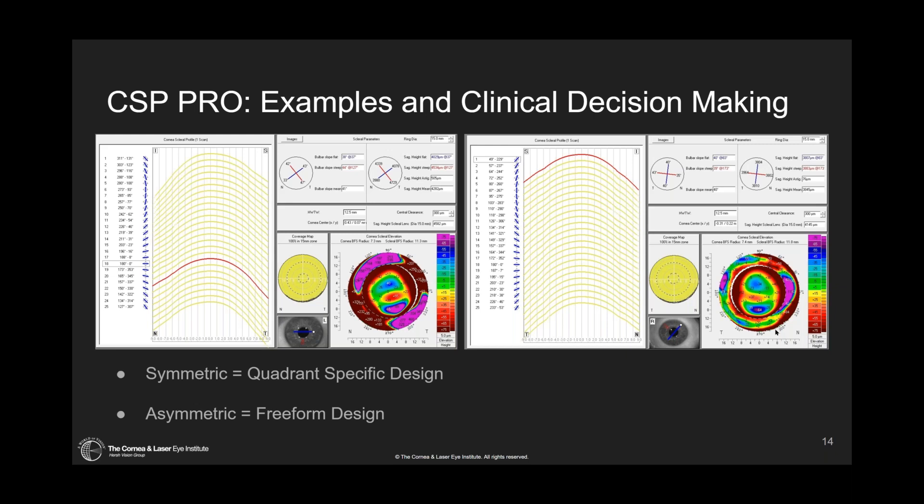In our clinic, when I see a brand new patient who has never worn a lens before, I get a CSP scan and let that determine which direction I go. If it's a very simple, straightforward eye, I may decide to diagnostically fit it. If it's a very complex geometry, I'll use a scan-based or impression-based lens for that individual.